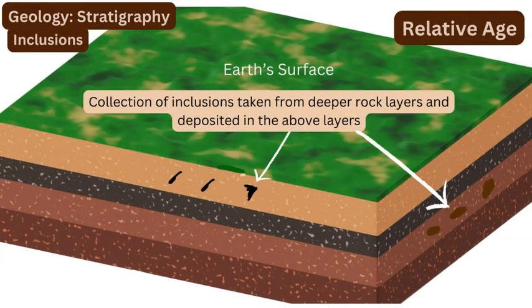The last principle is the principle of inclusions. This involves small bits of rock that come from lower rock layers, weathered and transported from lower strata, then deposited by an igneous intrusion into a higher or closer-to-surface rock layer where they are found. These inclusions would be older pieces of rock compared to the country rock in which they are found.